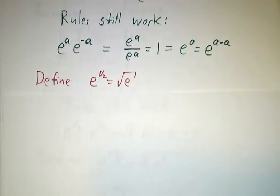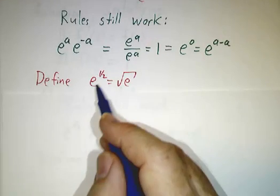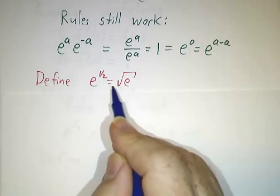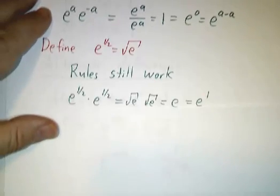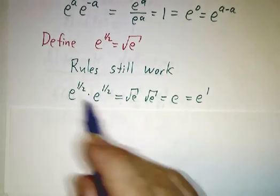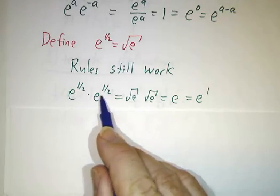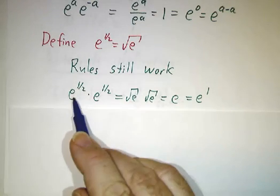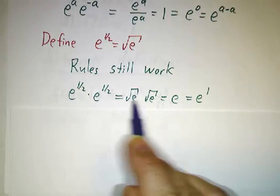And then we define fractional powers. We want e to the 1 half to be square root of e. Well it's not multiplying e by itself half a time. But we want e to the 1 half times e to the 1 half to be e to the 1 half plus a half. In other words, e. So the only way to make that work is to make e to the 1 half be root e.